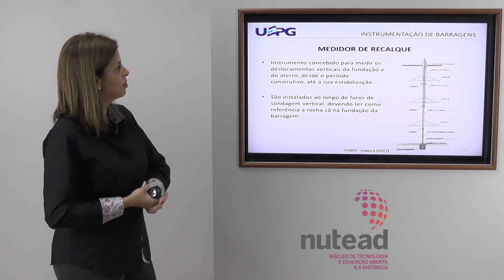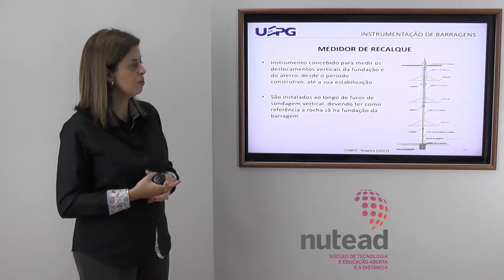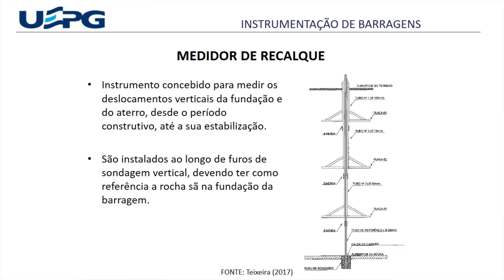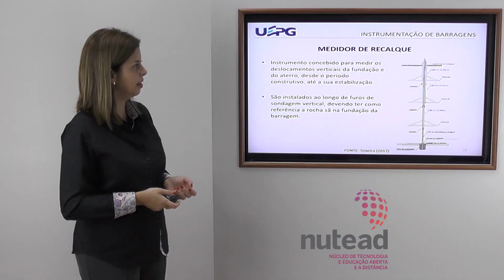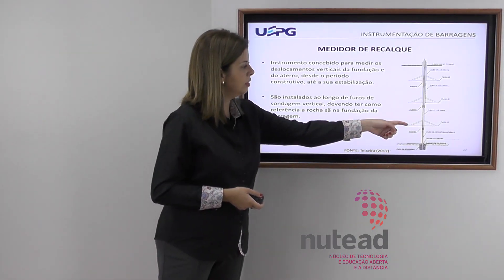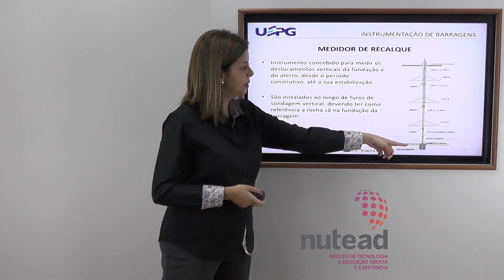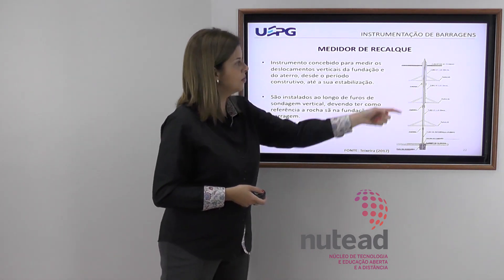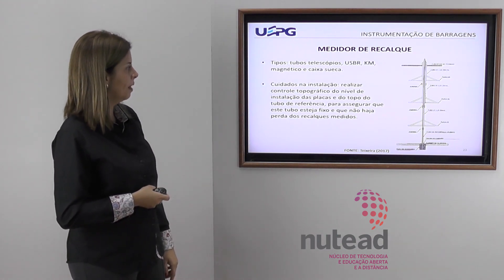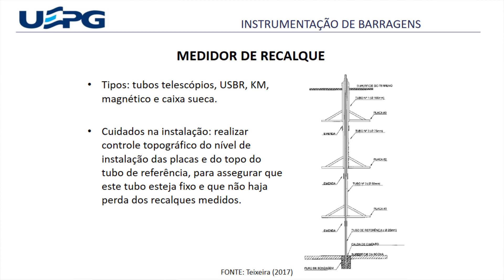Saindo da água, temos os medidores de recalque, concebidos para medir os deslocamentos verticais da fundação e do aterro desde o período construtivo até a estabilização. Alguns tipos são instalados ao longo de furos de sondagem vertical, devendo ter uma referência indeslocável, como uma rocha-sã, na fundação da barragem. Aqui temos um exemplo de medidor de recalque instalado num furo de sondagem, com placas em diversas alturas. Existem tipos como tubos telescópicos, SBR, KM, magnético e caixa sueca.